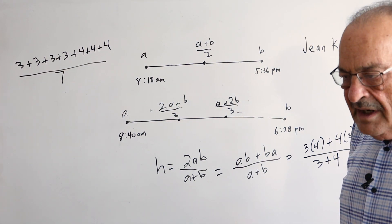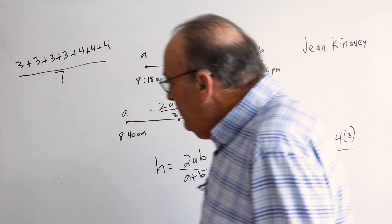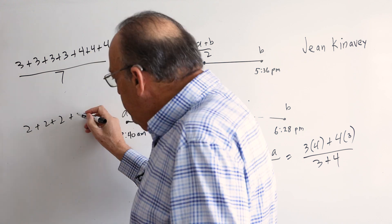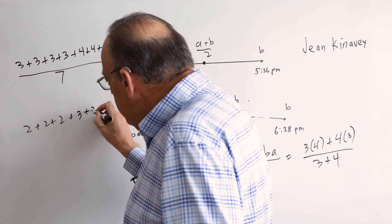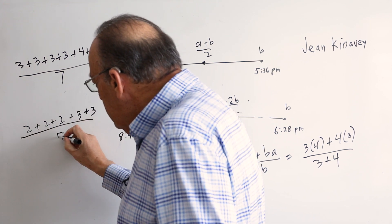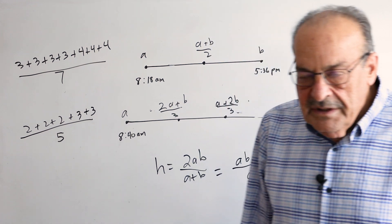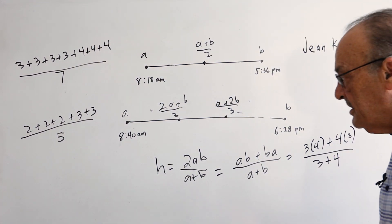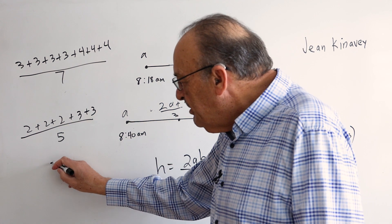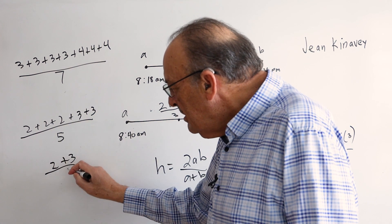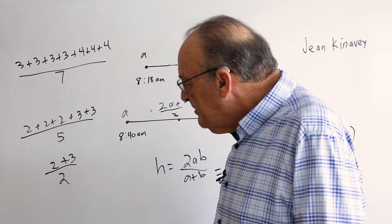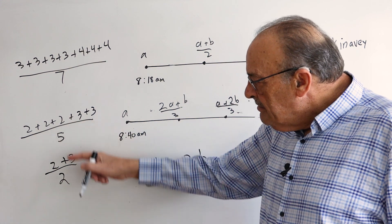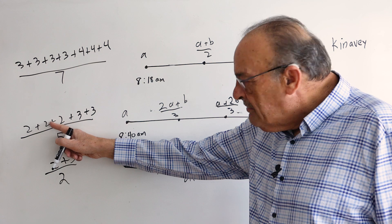Let's do the harmonic mean of 2 and 3. We would have 3 twos plus 2 threes over 5, and that would be the harmonic mean of 2 and 3. But you can see that this would be to the left of 2 plus 3 divided by 2. So this would be a bigger number than this, because here we have more of the smaller number.